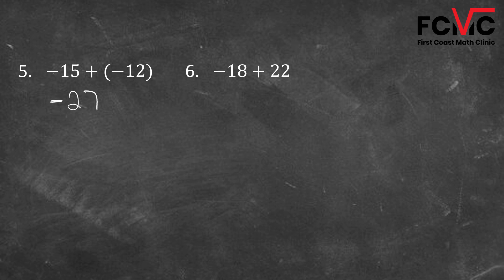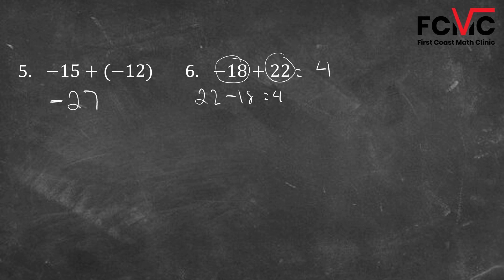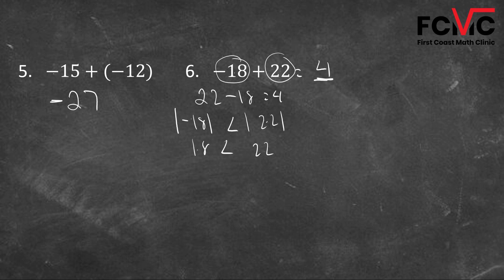Example 6: negative 18 plus 22. We've got opposite signs, so we want the difference. What's the difference between 22 and 18? The difference is four. Now we figure out the sign — which number is further from zero, negative 18 or 22? The absolute value of negative 18 is 18; the absolute value of 22 is 22. So 22 is further from zero and has a greater absolute value. Since 22 is positive, our answer four is going to stay positive.